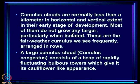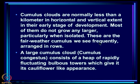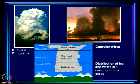Cumulus clouds are normally less than a kilometer in horizontal and vertical extent in their early stage of development. Most of them do not grow any larger, particularly when isolated — these are the fair-weather cumulus we see frequently arranged in rows. A large cumulus cloud called cumulus congestus consists of a heap of rapidly fluctuating bulbous towers which give it its cauliflower-like appearance.